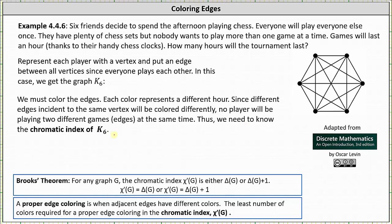To begin, notice each vertex has degree five, which indicates Δ(G) = 5. If Δ(G) = 5, then the chromatic index is either five or Δ(G)+1, which is six.